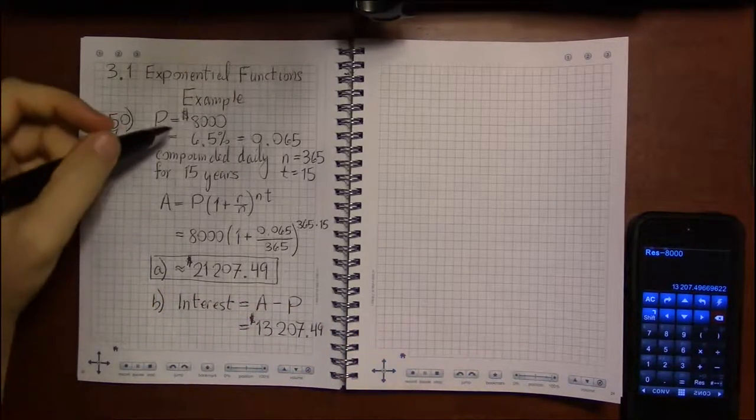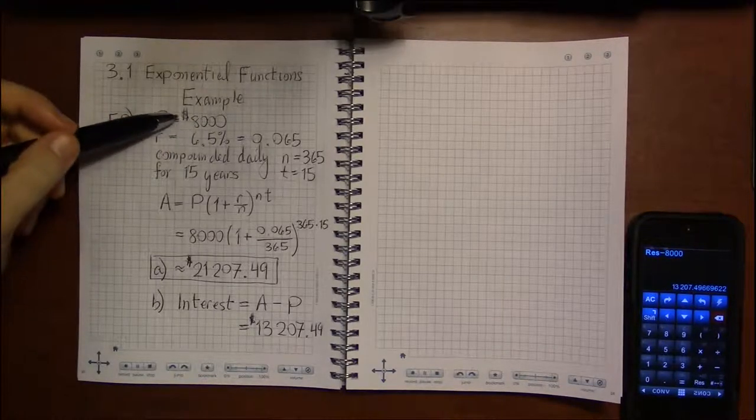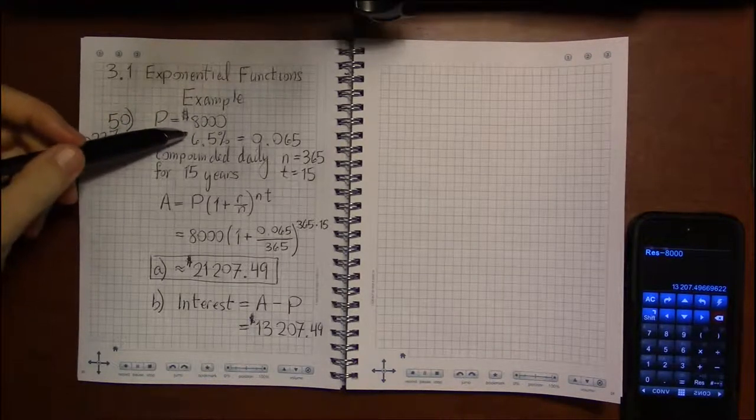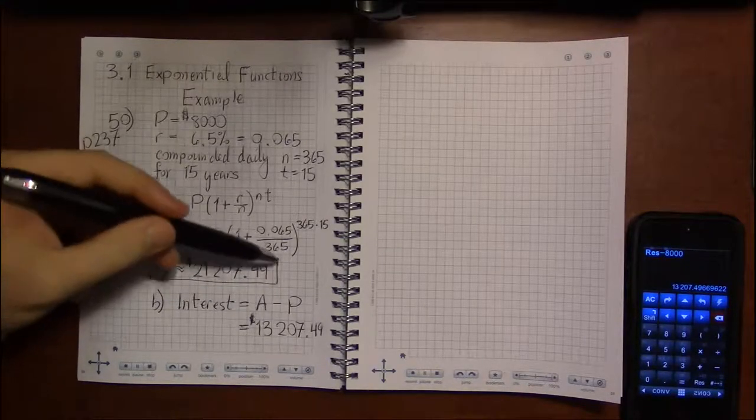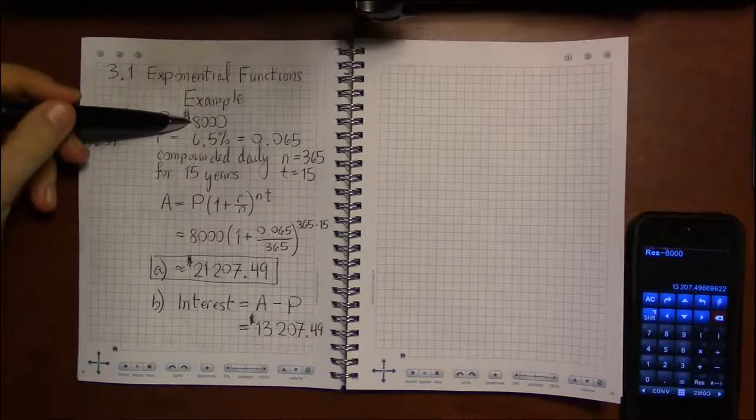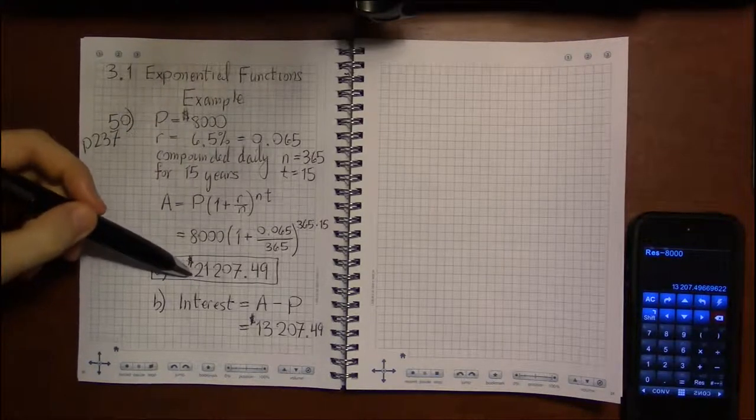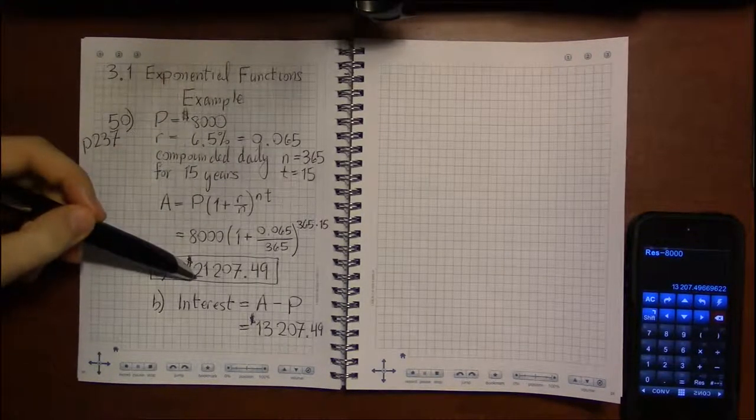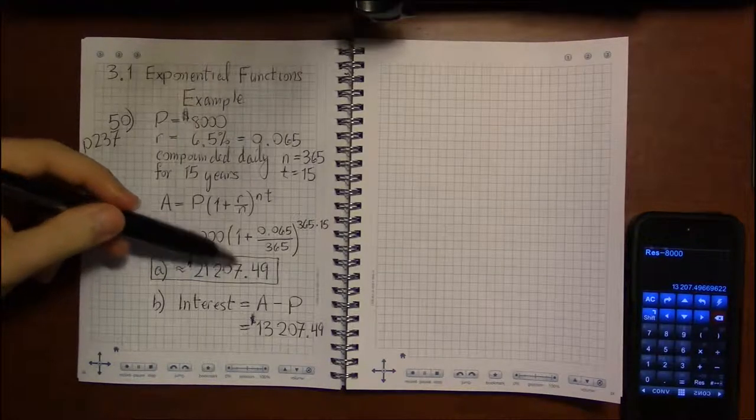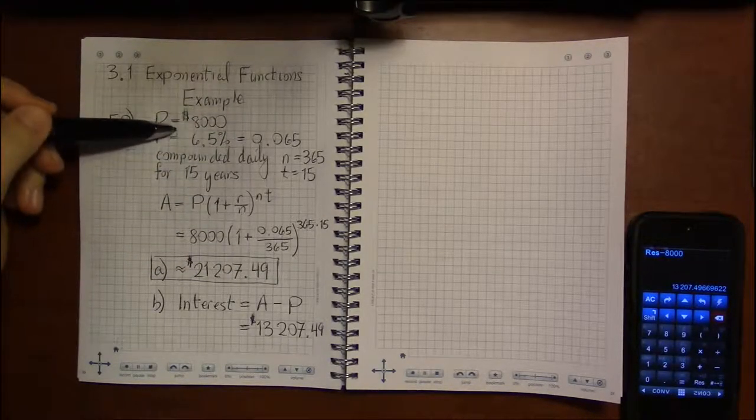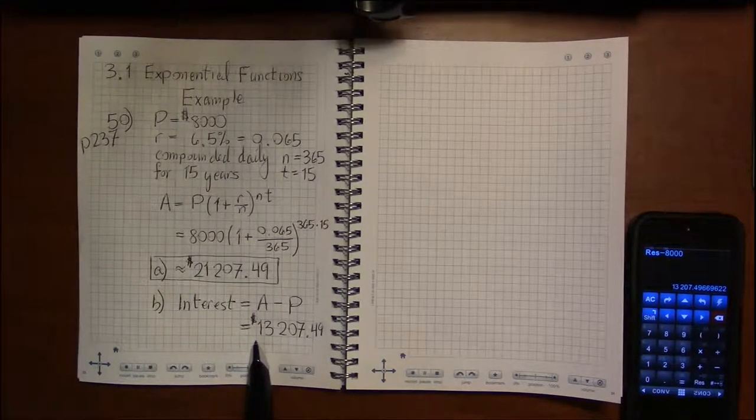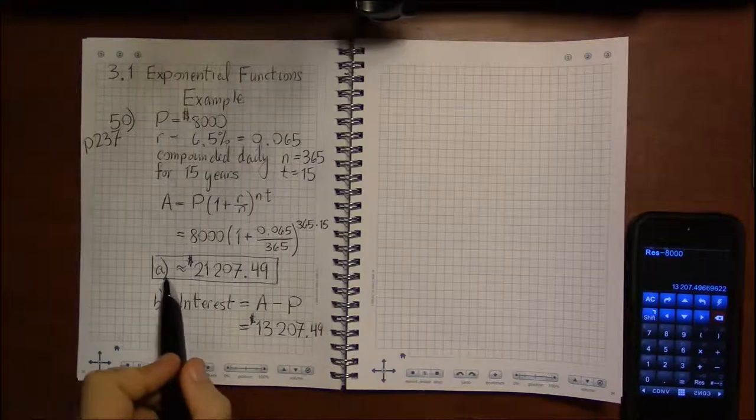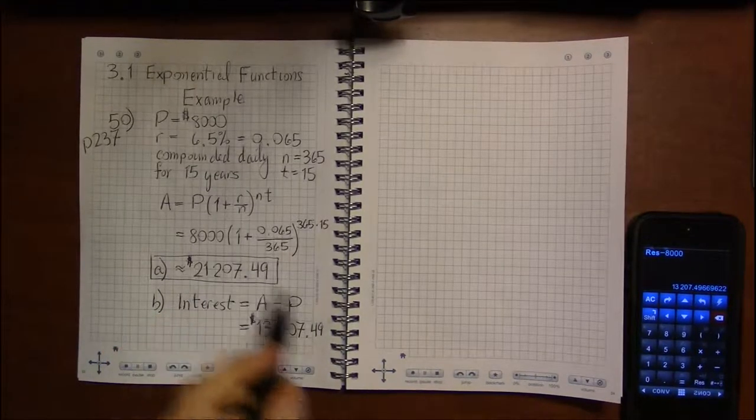So we almost tripled. We're maybe a few more compoundings shy of tripling the amount of money that we initially put into the account. We'd hit three times the amount when we hit $24,000, three times our initial investment. So we've already gone past doubling and we're almost to the point where we're tripling our investment.